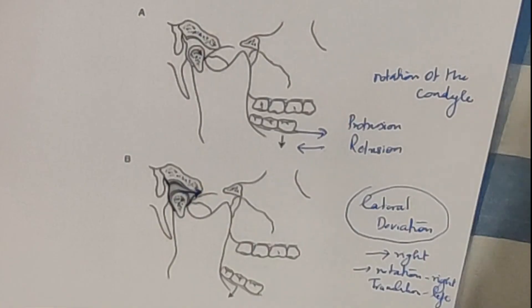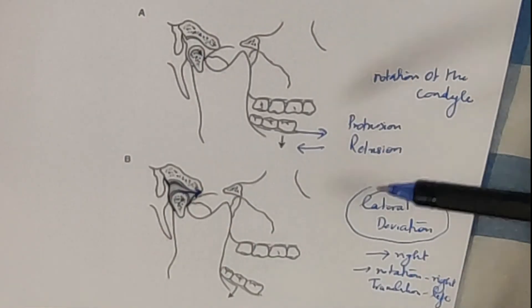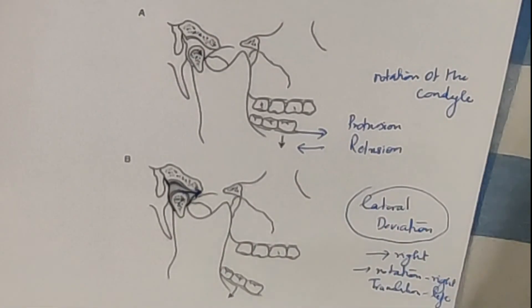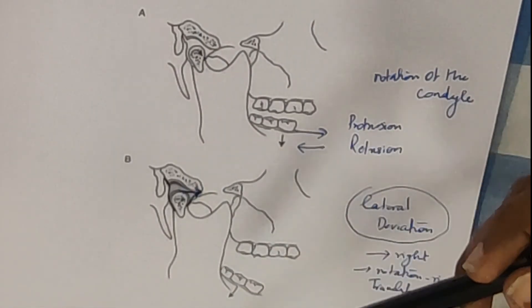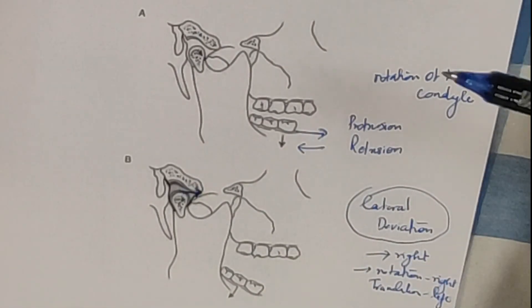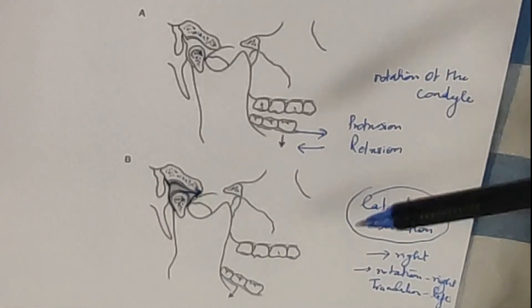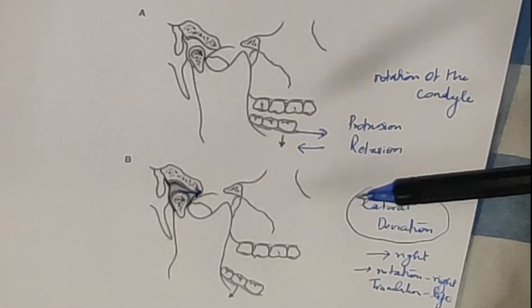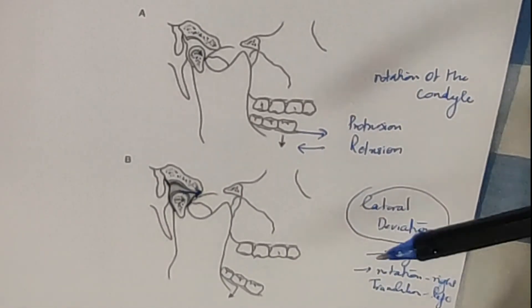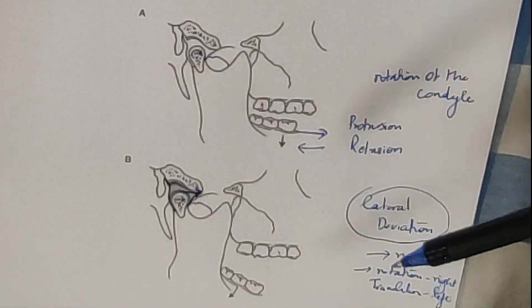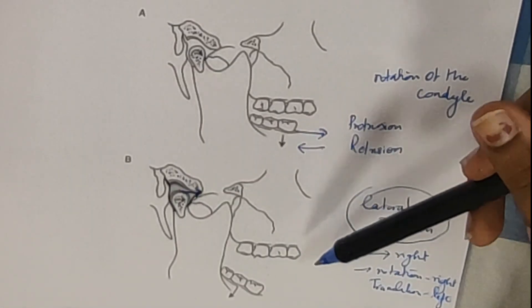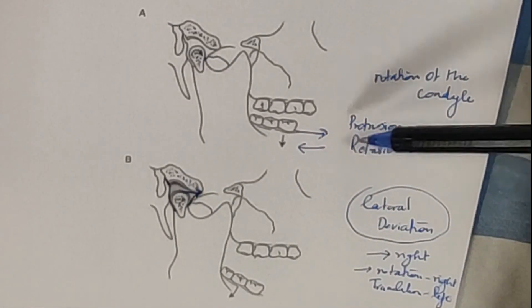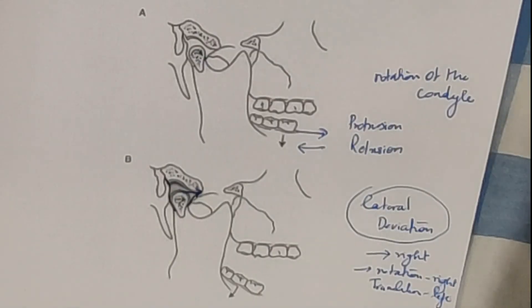Functionally, when a patient presents with TMJ pain, one of the major movements we assess is mouth opening and closing, because patients most commonly complain of pain during these movements. They may also have clicks or reduced range of motion, or other problems. So mostly we evaluate mouth opening and closing.